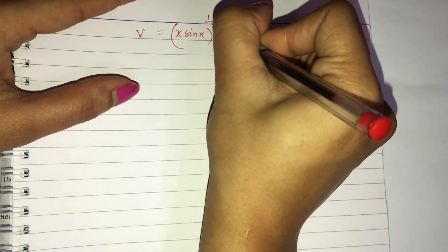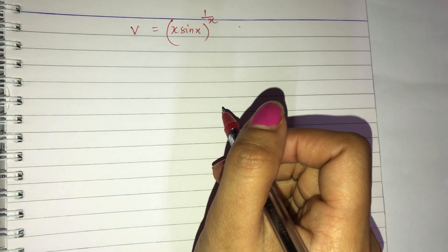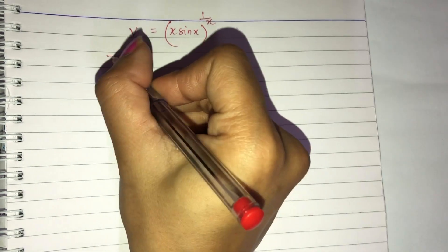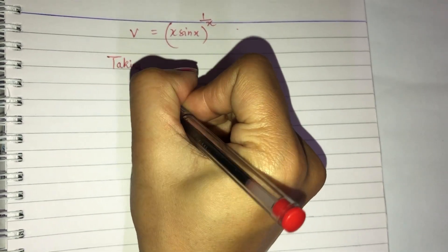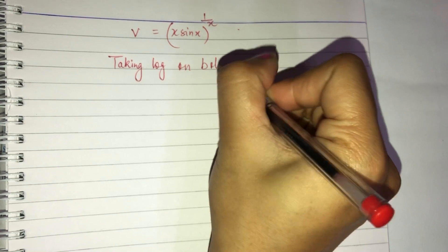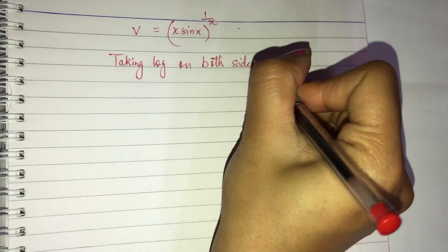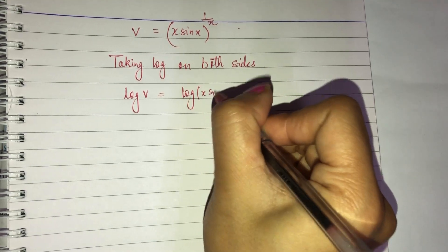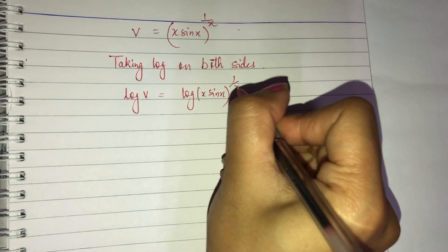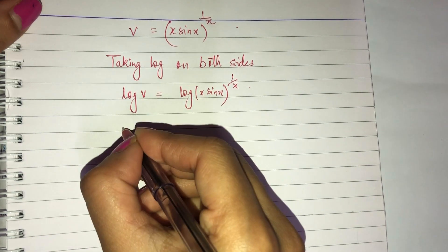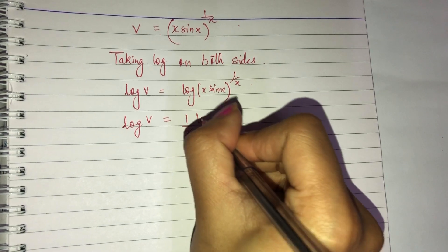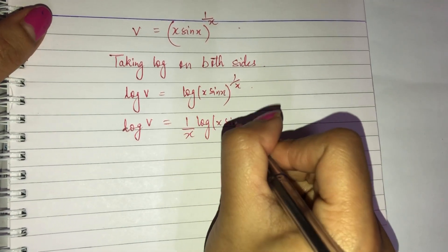v is equal to x·sin(x) raised to 1/x. We'll do this the same way — since the power is a variable, we take log. Taking log on both sides: log v = log of (x·sin x) raised to 1/x. Using log(a^b) = b·log(a), this becomes (1/x)·log(x·sin x).